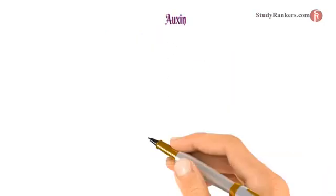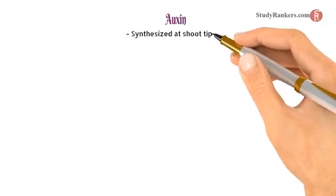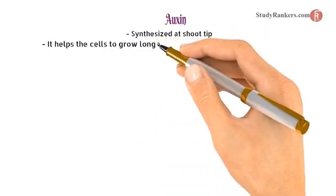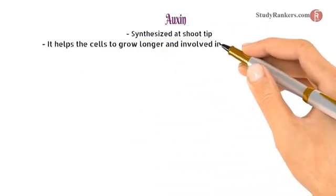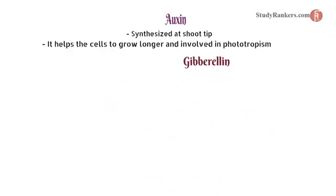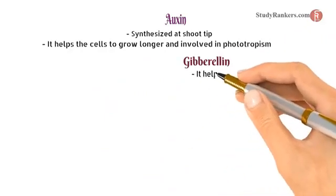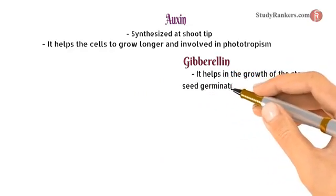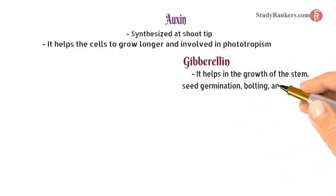Auxin is a hormone synthesized at the shoot tip. It helps the cell to grow longer and is involved in phototropism. Gibberellin helps in the growth of the stem, seed germination, bolting, and flowering.